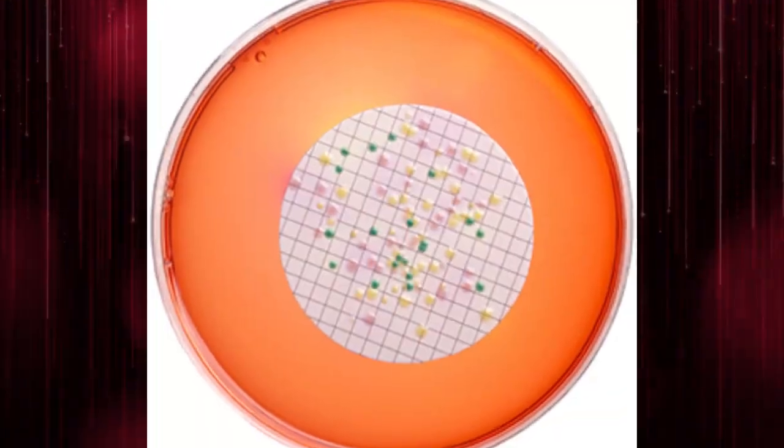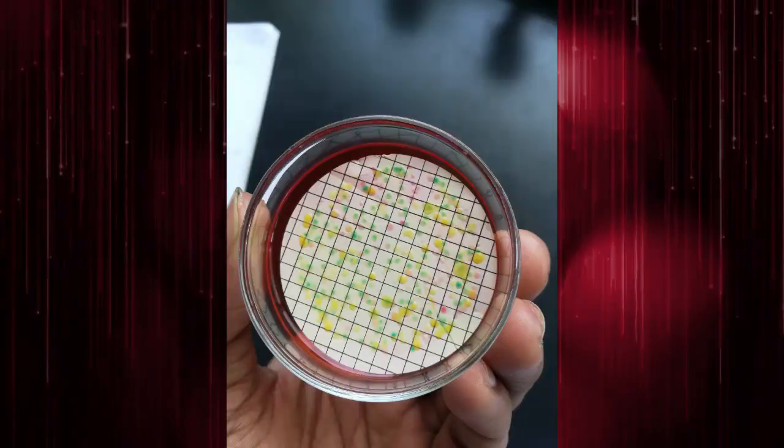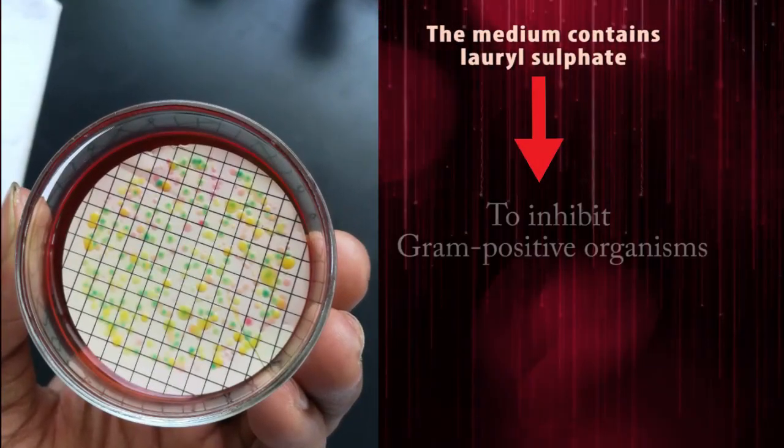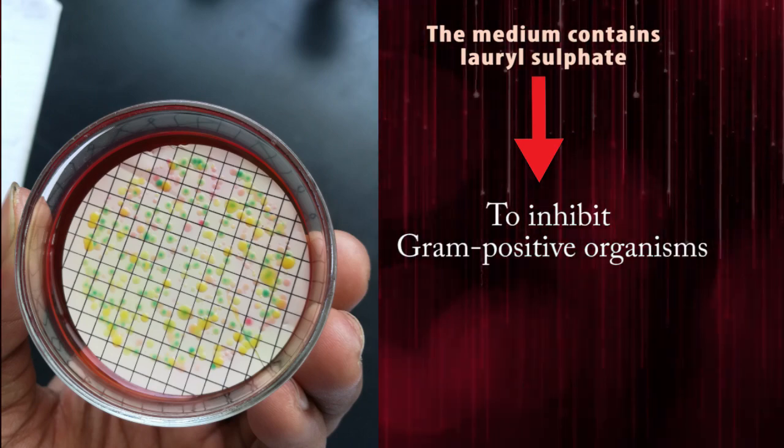Organisms are isolated on a membrane filter and placed onto an MLGA plate. The medium contains lauryl sulfate to inhibit gram-positive organisms.